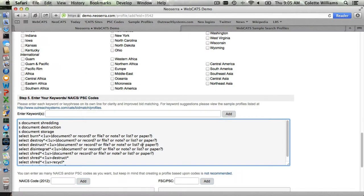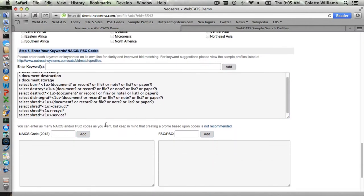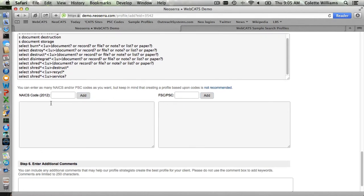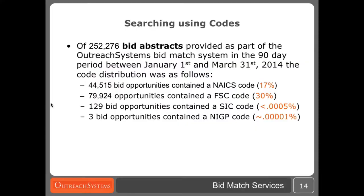Which takes us to codes. In step five we can enter keywords, but below we can also enter codes. You can use NAICS codes and/or FSC codes to search against the bid opportunities. Generally speaking, we strongly recommend against using codes. Of the approximately 250,000 bid abstracts that we processed between January and March 31st of 2014, only 17% included a NAICS code. Which means that if your search profile includes only a NAICS code and no keywords, you're eliminating 83% of all bids. Remember that only 50% of our bids are coming from federal sources — state and local agencies and foreign agencies do not use the NAICS code. So we eliminate all those opportunities by searching by NAICS code. Even within the federal opportunities, 33% of the bid abstracts do not contain a NAICS code.